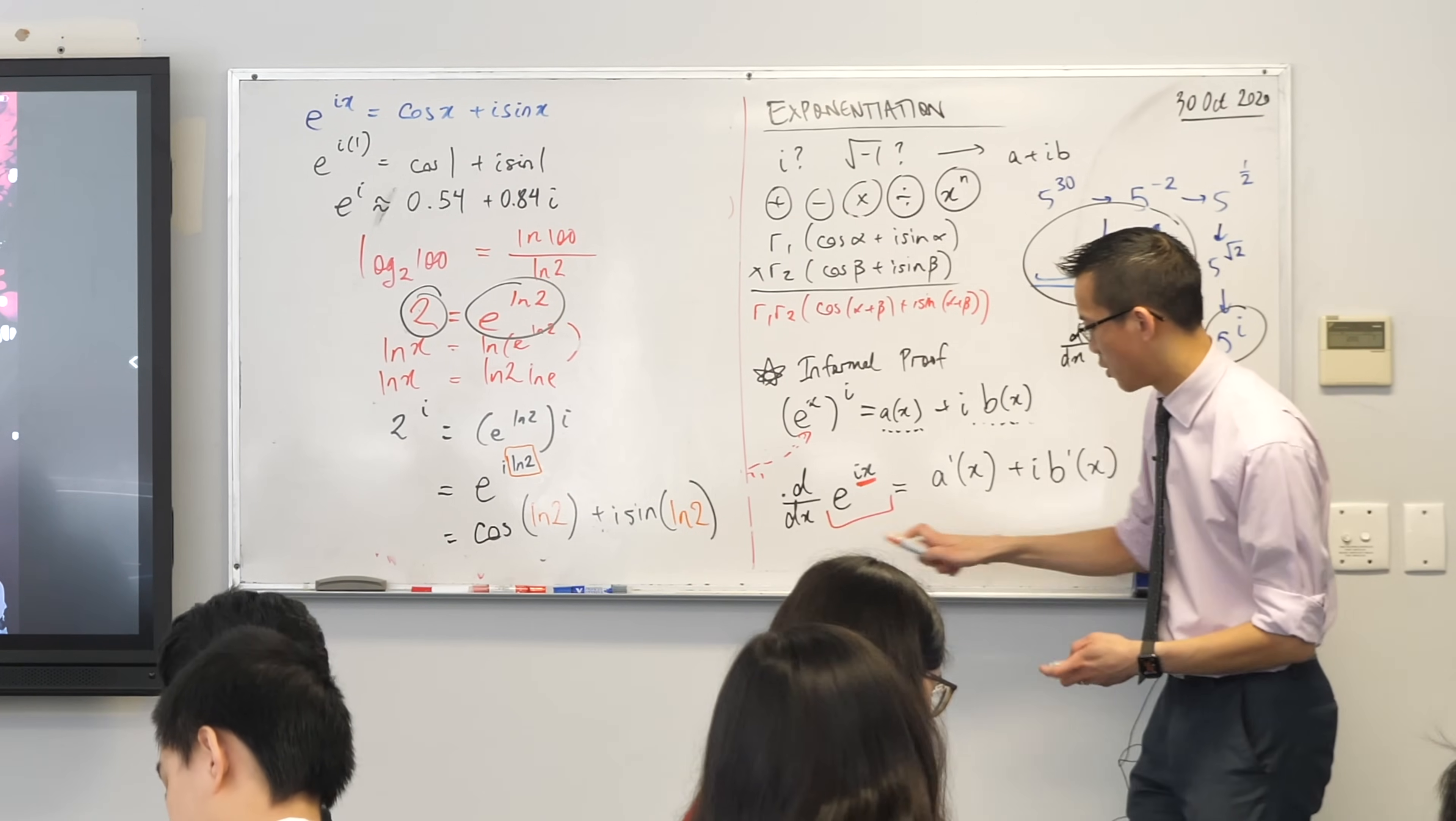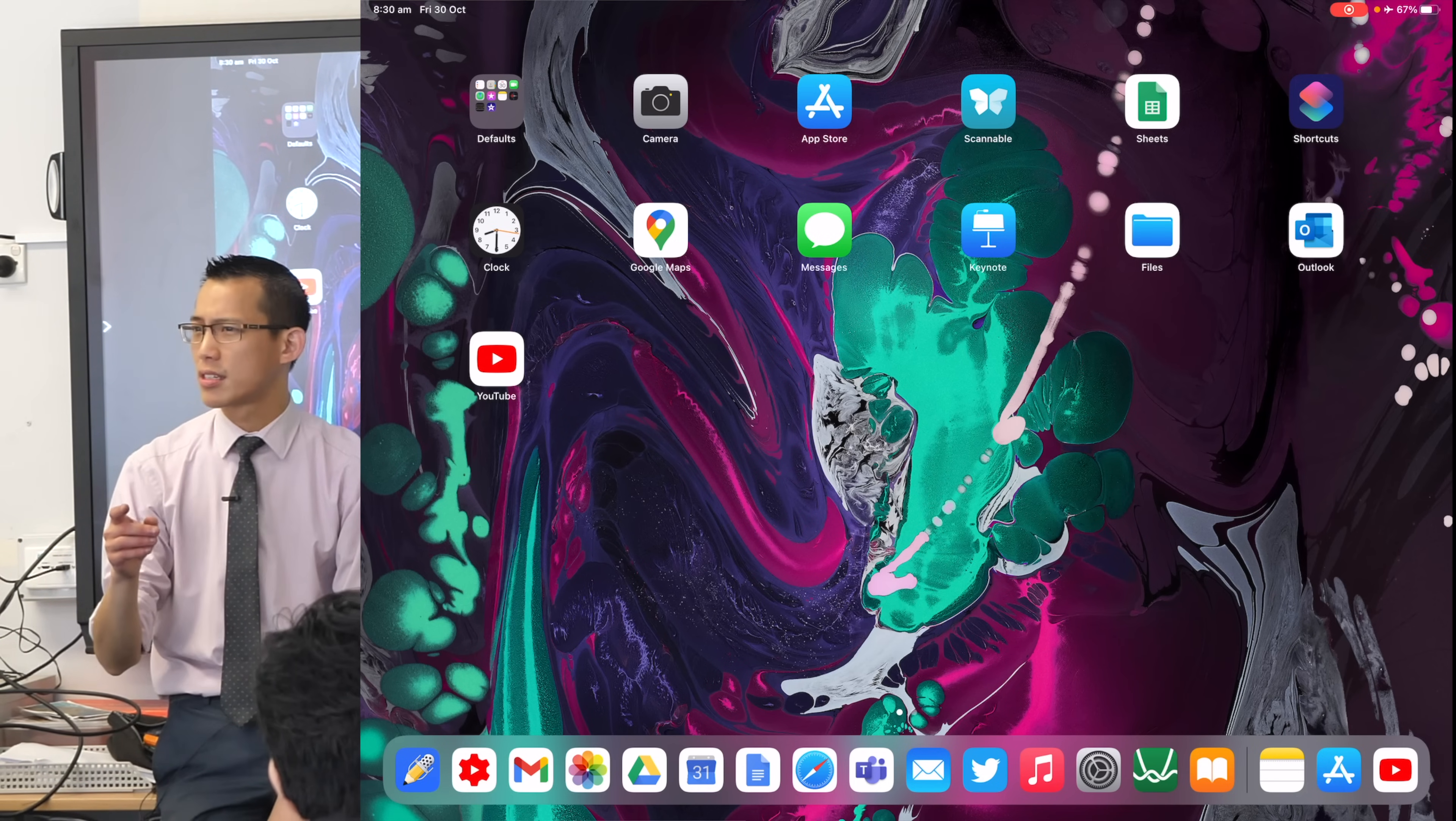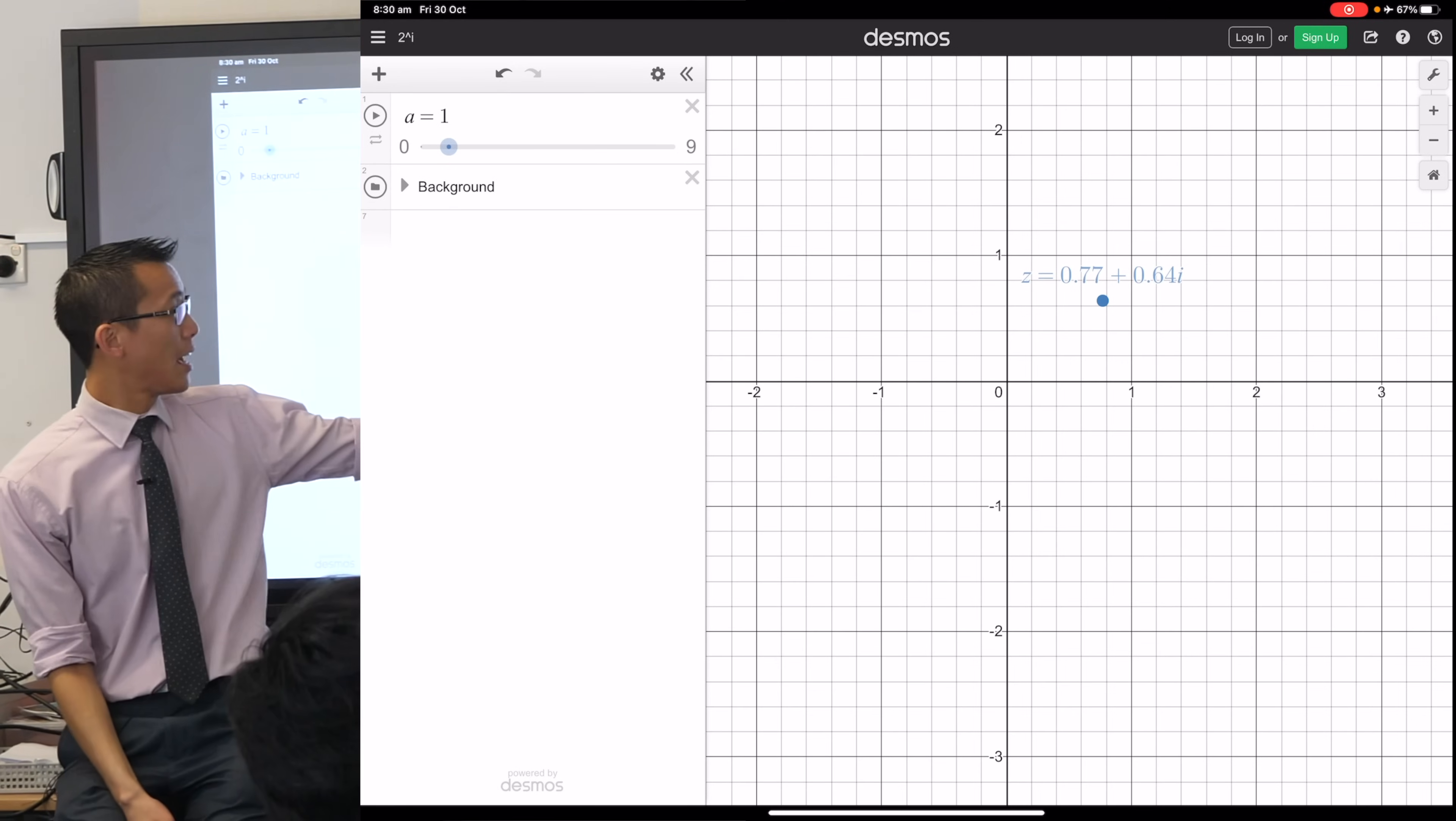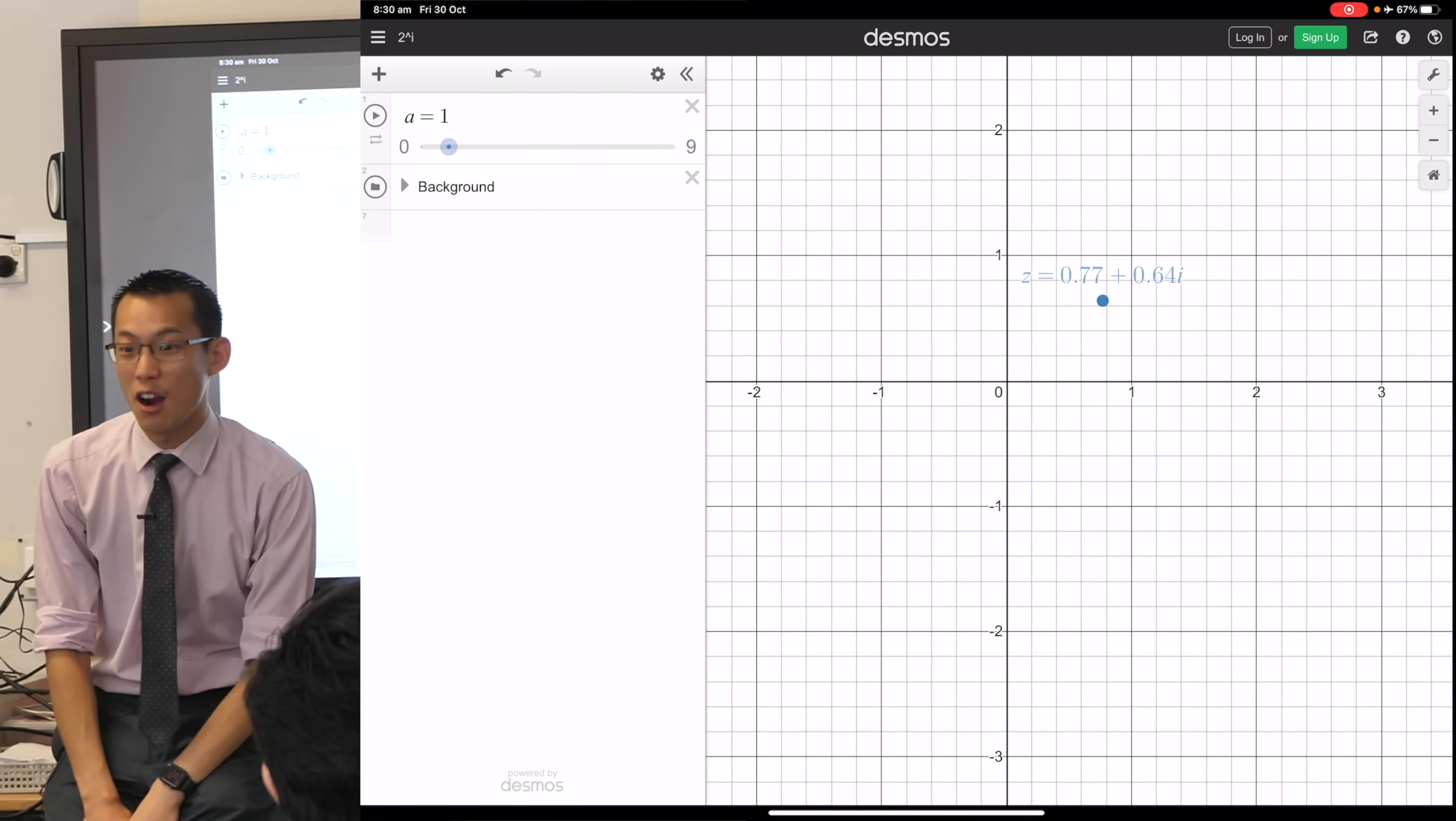So reach for your calculator. And go ahead and work out these two things. Did you get 0.77 and then 0.64 from memory? Is that right? Okay. So here's one I prepared earlier. That right there. Am I in the right form? Sorry, just let me check. Yeah, there we go. Okay. There. Don't move. There is 2 to the power of I.